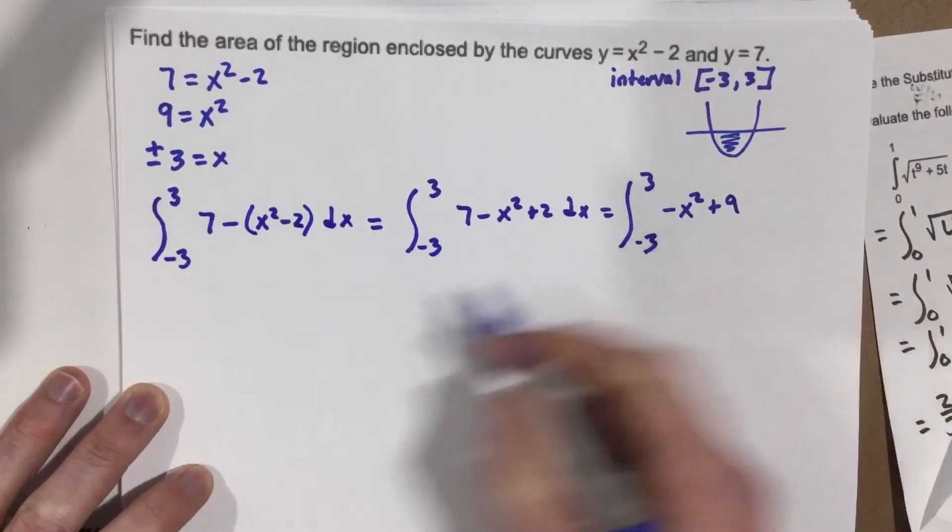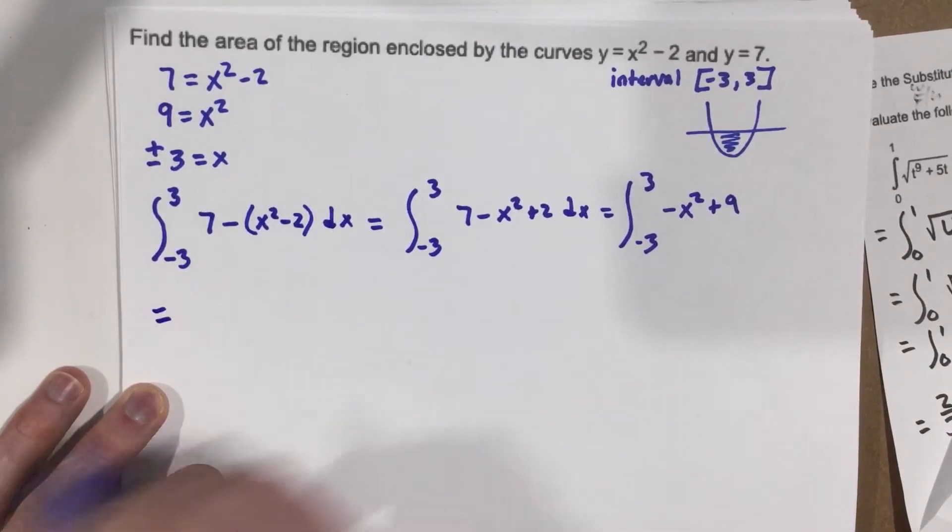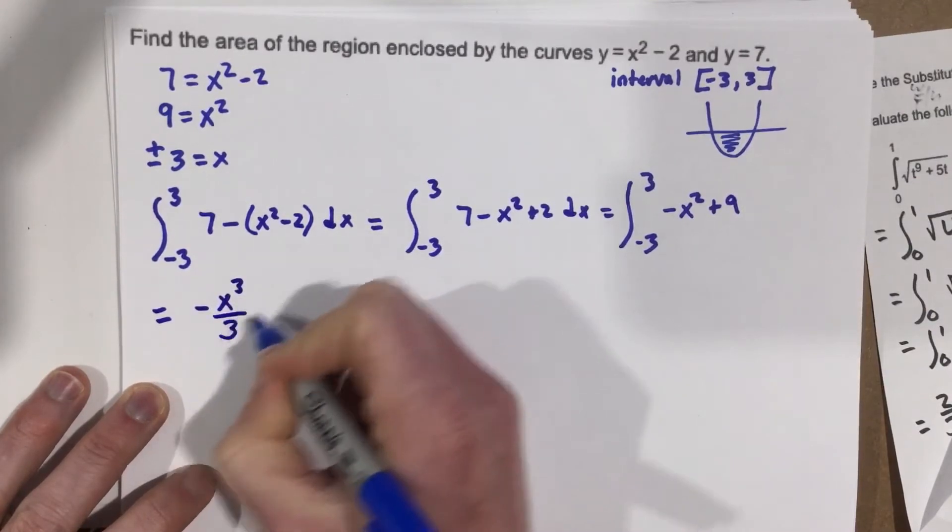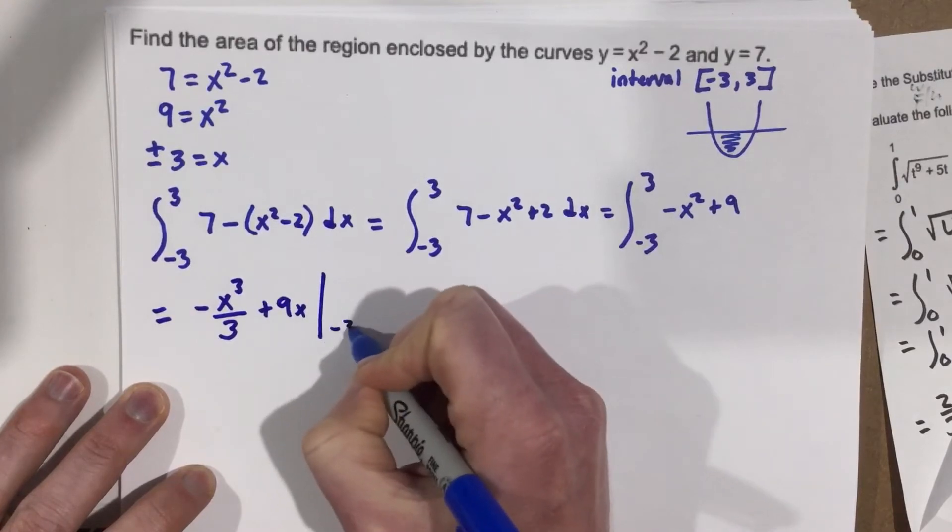We do the integral. So we can actually integrate. Notice the u substitution here at all. We'll end up with negative x cubed over 3 plus 9x.